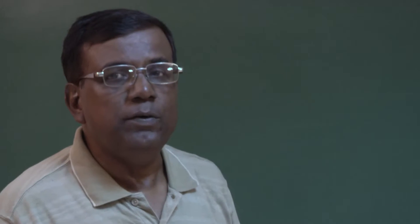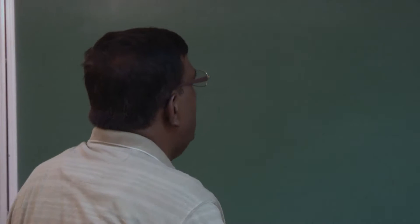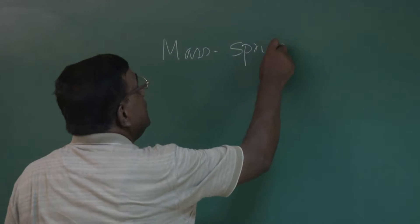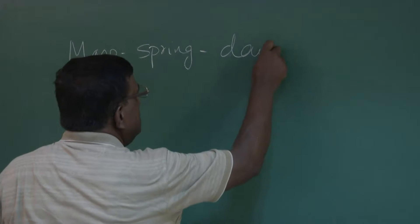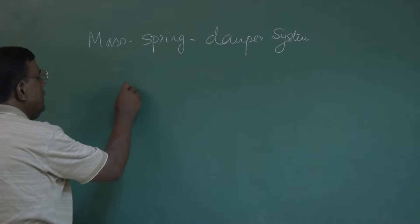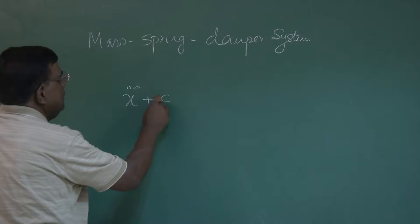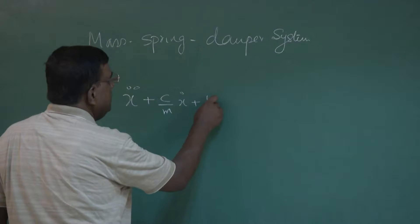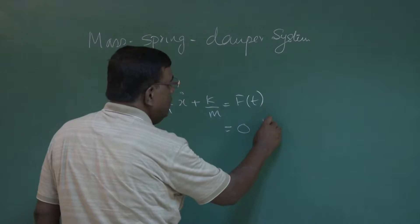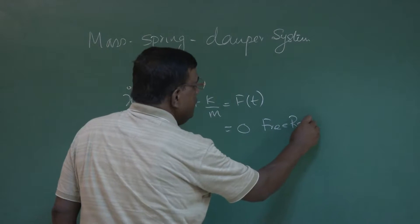We are more bothered about the transient, and that is the part we need to understand if we want to characterize the dynamic stability of an airplane. When we talk about the mass-spring-damper system, we get an equation of this form: x double dot plus c by m times x dot plus k by m equals f(t). For a free response, this is equal to 0, and that is what we are looking for.